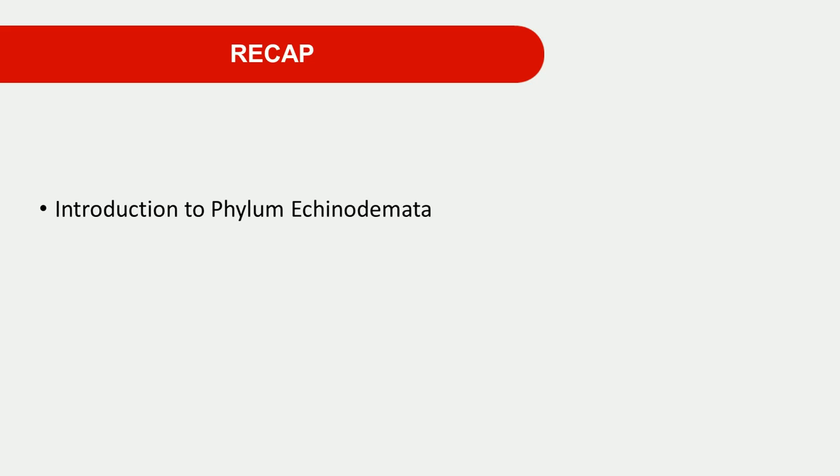Now we do a quick review of Echinodermata before starting today's lecture. In the last lecture, we discussed the introduction of Phylum Echinodermata. As you know, the word Echinodermata comes from Greek — 'Echinos' means spiny and 'Derma' means skin. This terminology was first used by Jacob Klein in 1734. About 7,000 species are reported, and the body of these forms varies in size and weight as compared to their habit and habitat.